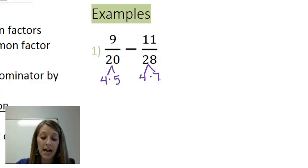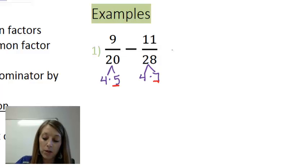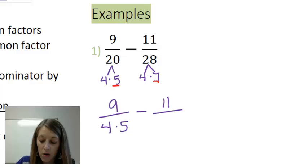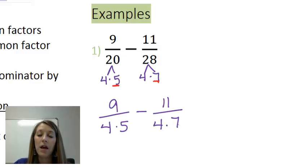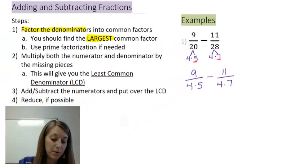To confirm that 4 is the largest common factor, I look at the other pieces — 5 and 7 — and double-check that those two factors don't have anything in common. Of course they don't, because they're prime. So I rewrite the fractions as 9 over (4 times 5) minus 11 over (4 times 7). We've completed step number 1 without needing to use prime factorization.